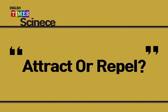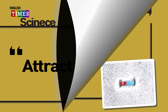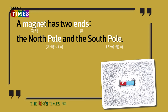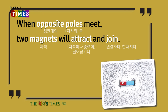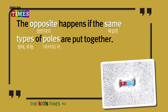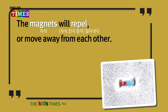Science — Attract or Repel. Have you ever tried joining two magnets together? A magnet has two ends: the North Pole and the South Pole. When the opposite poles meet, two magnets will attract and join. Meaning, the North Pole of one magnet and the South Pole of another magnet will cause the two magnets to join. The opposite happens if the same types of poles are put together. The magnets will repel, or move away from each other.